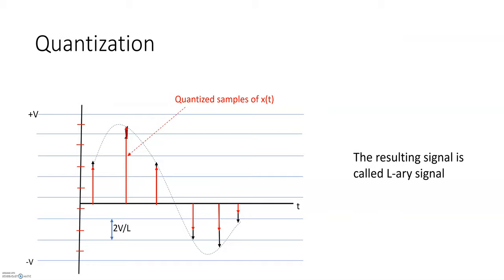Now we need to transmit or process this signal. We could do it as-is, but with a large number of levels it becomes impractical. If you have too many levels it's not much different from the original analog signal, so we need a better approach.